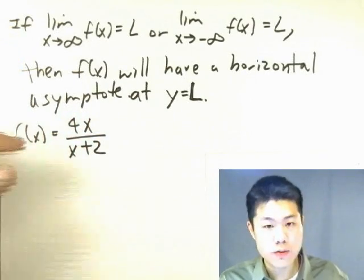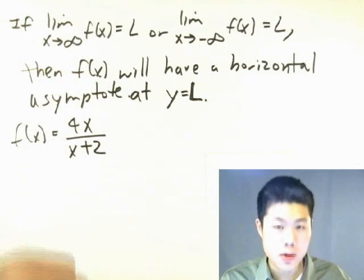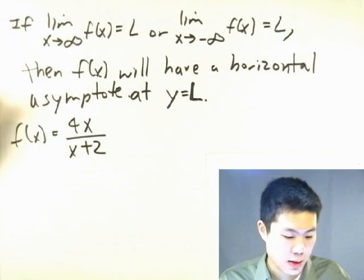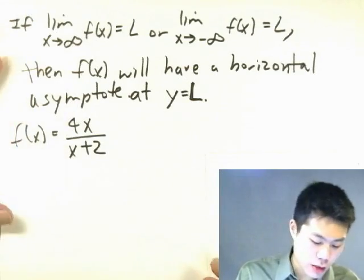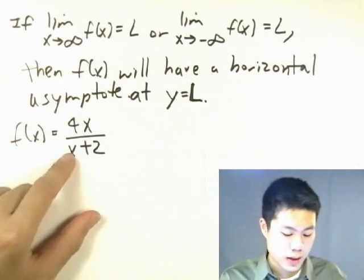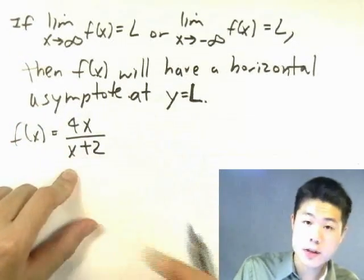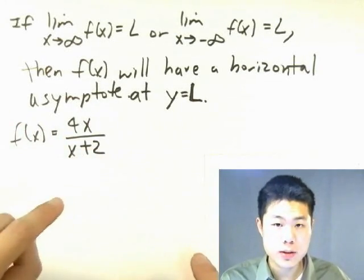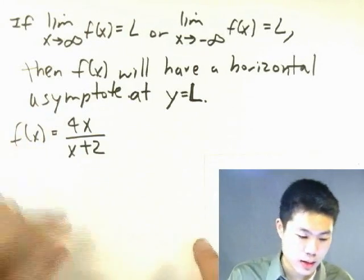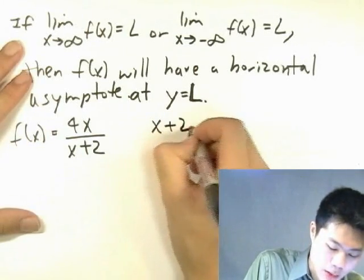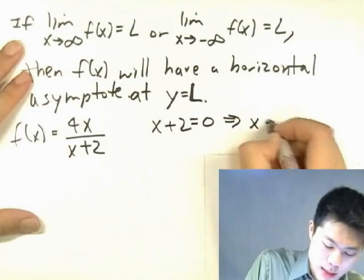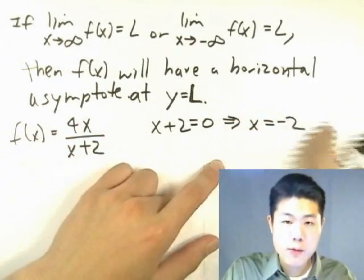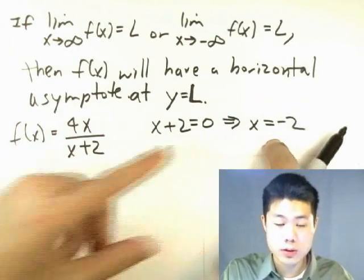Let's make this clear with an example. So f(x) is equal to 4x over (x + 2), and the question is to find the asymptotes of this function. Starting with the vertical asymptote — this is a rational function, so we'll have an asymptote if the denominator equals 0 but not the numerator. Setting the bottom to 0, we get x equals negative 2, so we have a vertical asymptote at x = −2.